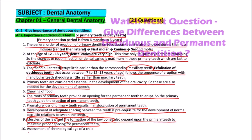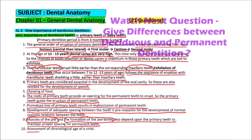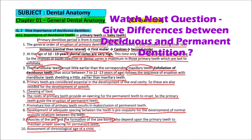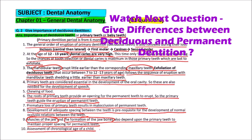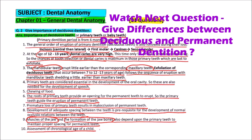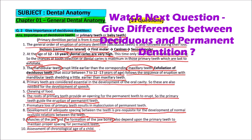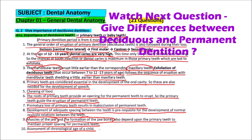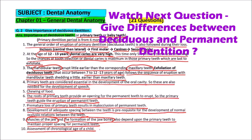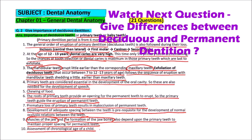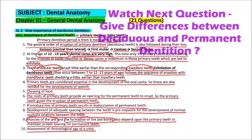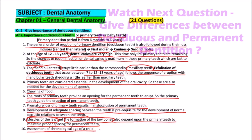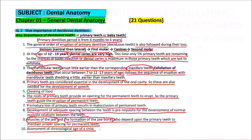Lastly, the assessment of the chronological age of a child is done by the deciduous dentition. So this is the importance of deciduous dentition. Hit the like button, share and subscribe to our channel to get the latest updates and notifications.